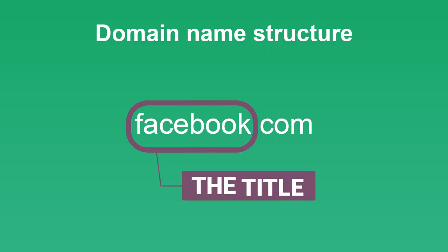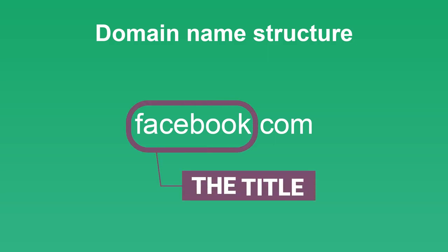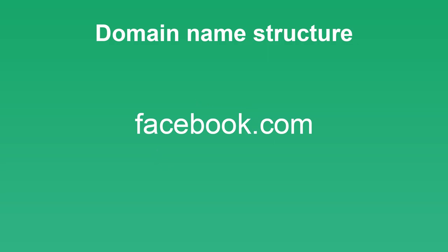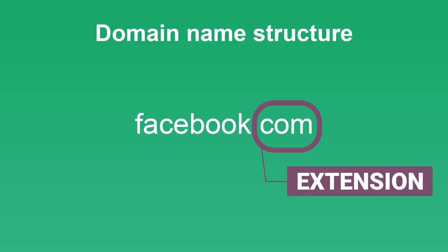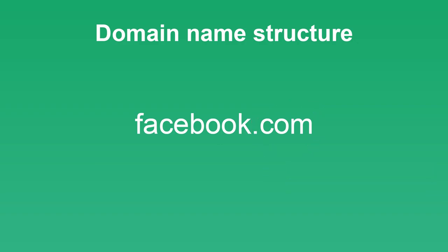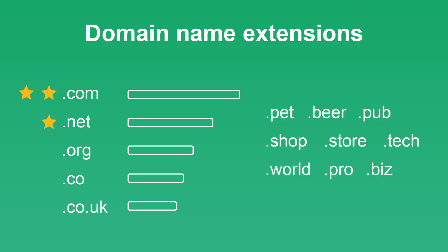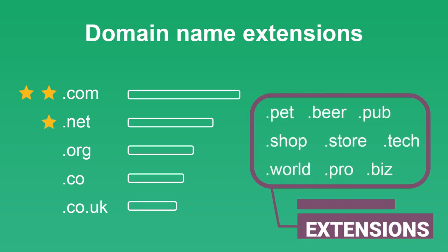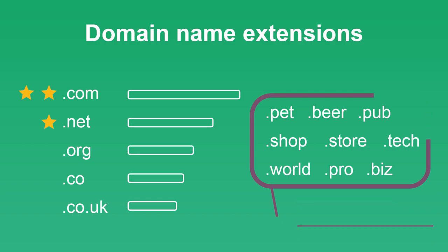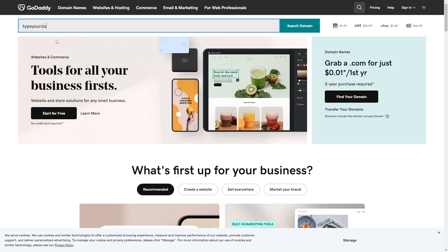The structure of a domain name has a title — like 'facebook' — followed by an extension such as .com. The most popular extension is .com, followed by .net, .co, .uk, and many others. I usually like to use GoDaddy.com because it's the most popular place to get your domain name, with plenty of extensions available.